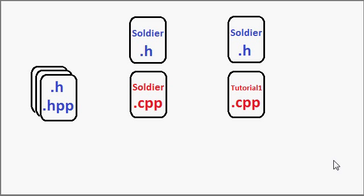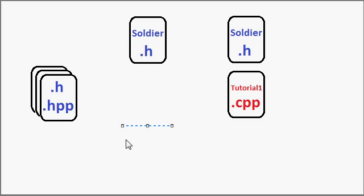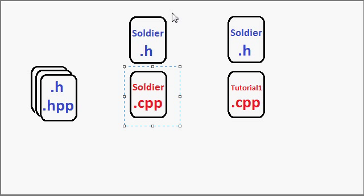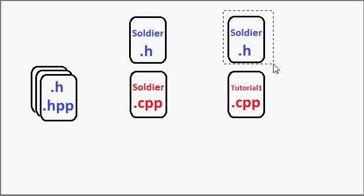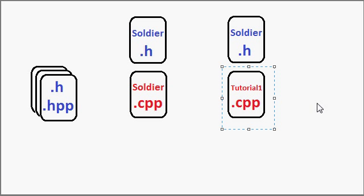It turns out that soldier.h gets included twice into two different translation units. First, it's included in soldier.cpp, because before we can implement the definition we need to declare what the soldier class is. Then we include it again in tutorial1.cpp, only for the purposes of beginning to use the class. The compiler allows this — the class is already declared, and it just needs to be defined, so the compiler will wait until it comes across the definition of the soldier class.